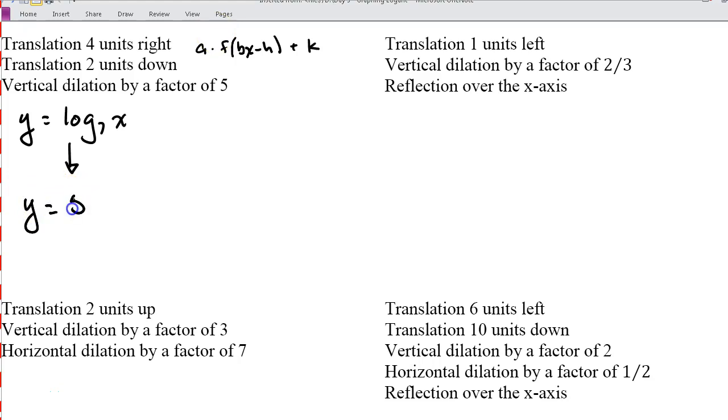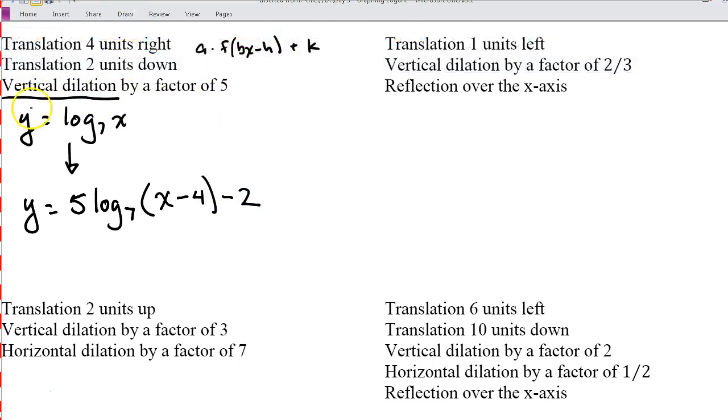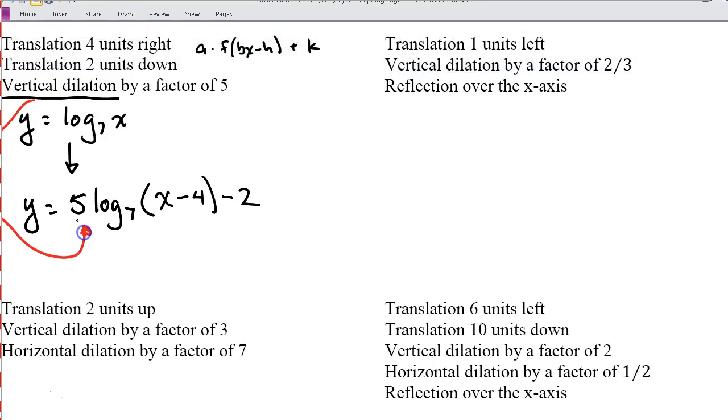So now my new function, I'm going to have y = 5·log₇(x - 4) - 2. I have no horizontal dilation, but I do have a translation of four units to the right, so to the right is minus four. And then down is minus two. Okay, so this vertical dilation is here, two units down is over here, and then four units to the right is over there. You can see where all the different parts came from.